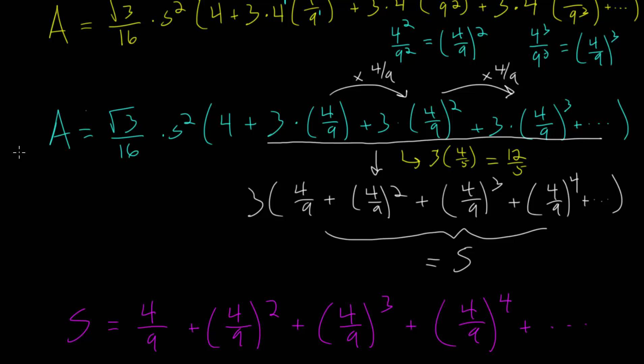We can rewrite a here. a is just the square root of 3 over 16 times s squared. And on the inside, we now have 4 plus 12 fifths. But if we add these fractions, 4, this is really just 20 over 5. And 20 fifths plus 12 fifths, that's 32 fifths.